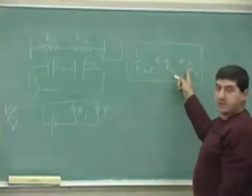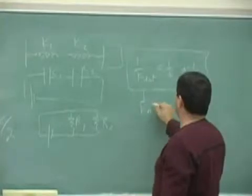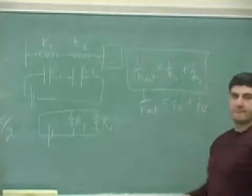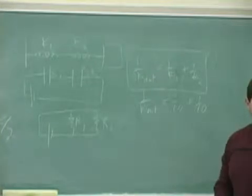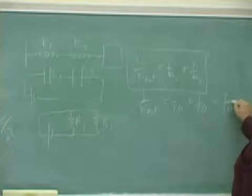Apply this formula to 10 and 10. Let's see what we get. 1 over 10 plus 1 over 10 equals 2 over 10, which is 1 over 5.